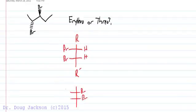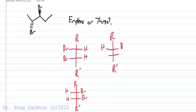With threo, we would have them on opposite sides of the Fischer projection. It all depends on whether the bonds are R or S, and the designation R or S does not necessarily predict whether it will be erythro or threo. We could also have another threo isomer that is the enantiomer.